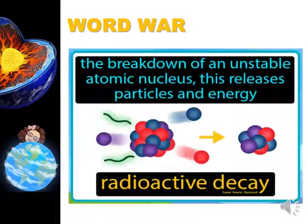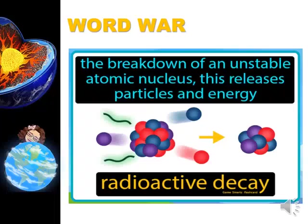Radioactive decay is the breakdown of an unstable atomic nucleus that releases particles and energy. Radioactive decay spontaneously happens in all rocks. This radioactivity is part of Earth's natural system and is the main cause of heat inside the Earth, and the driving force for Earth's tectonic system, which leads to volcanoes, earthquakes, and plate tectonics.